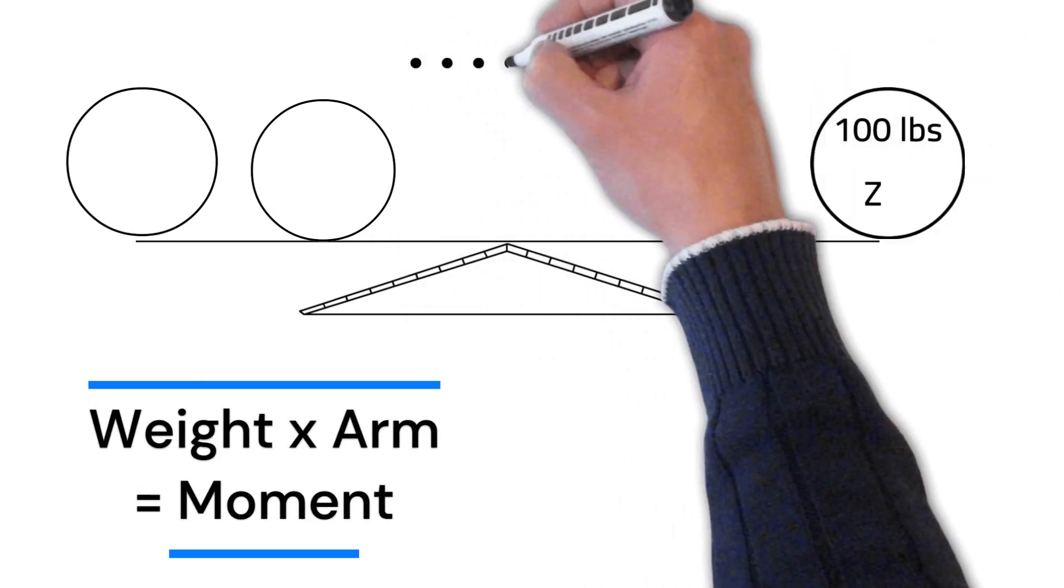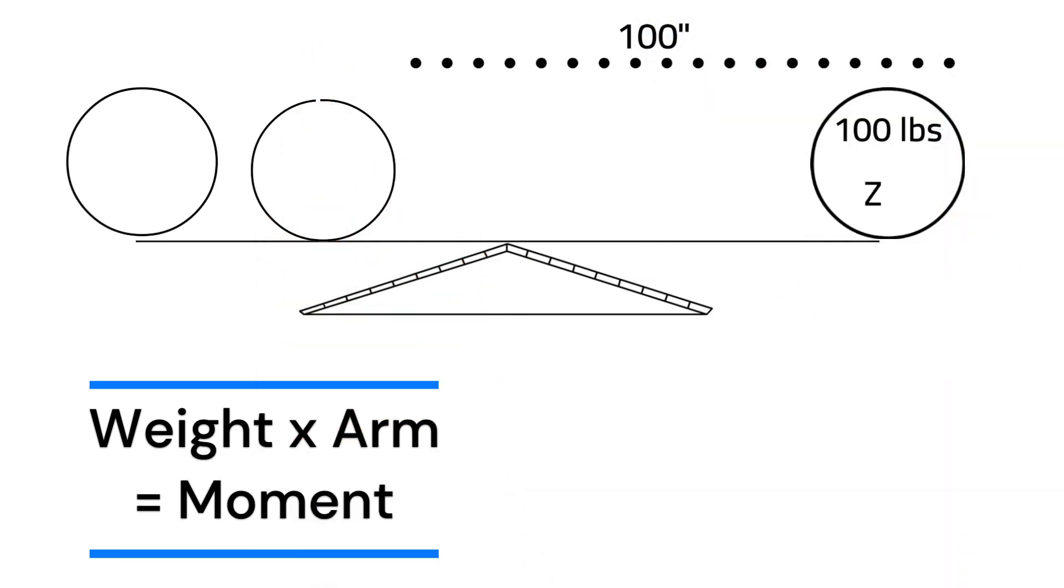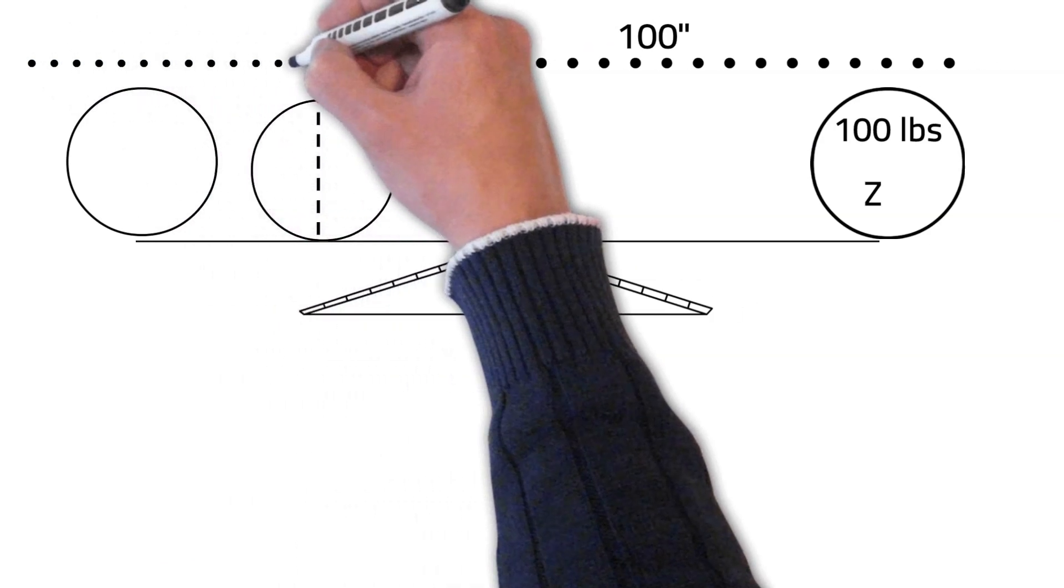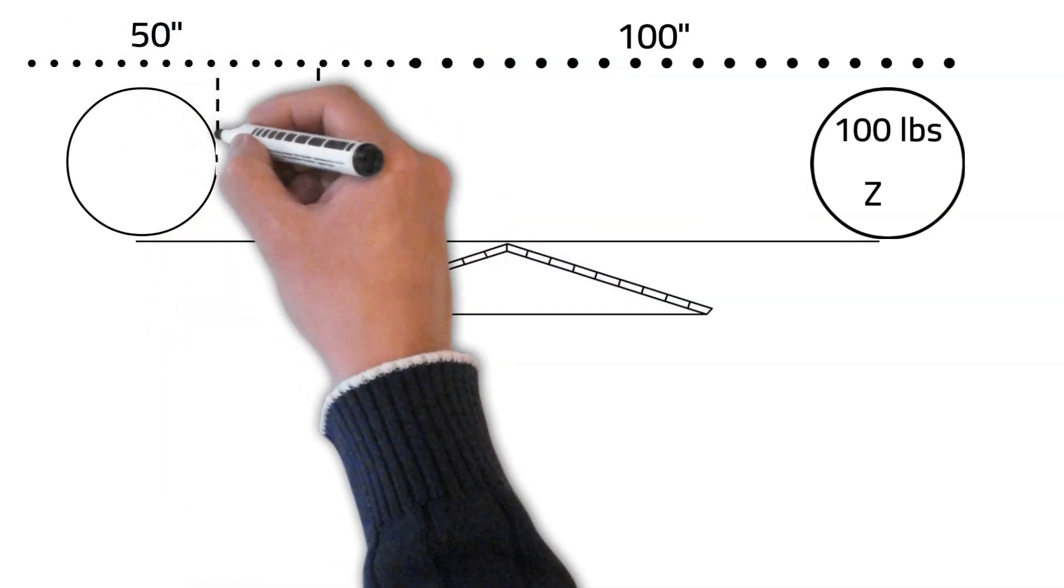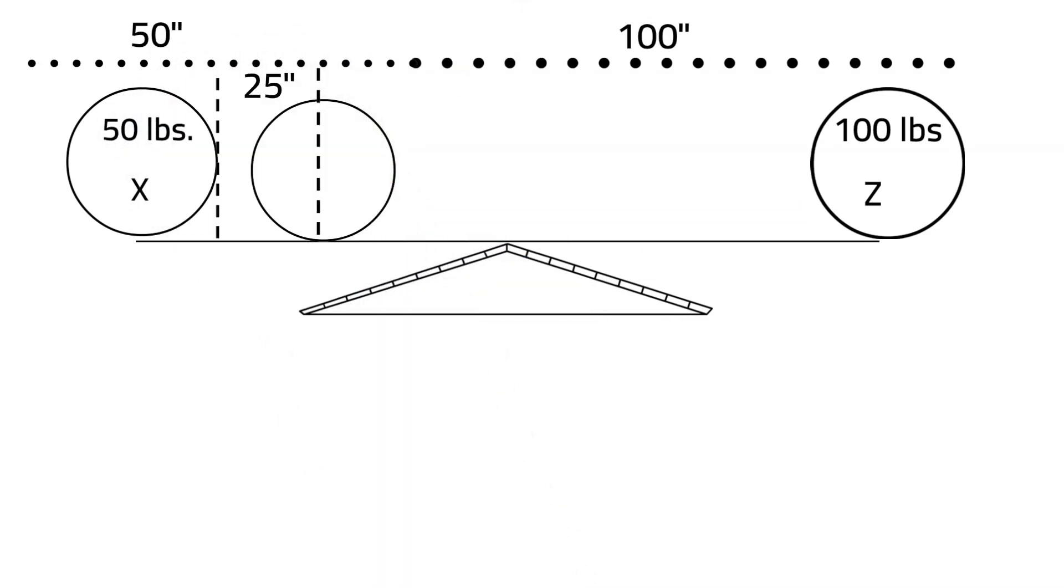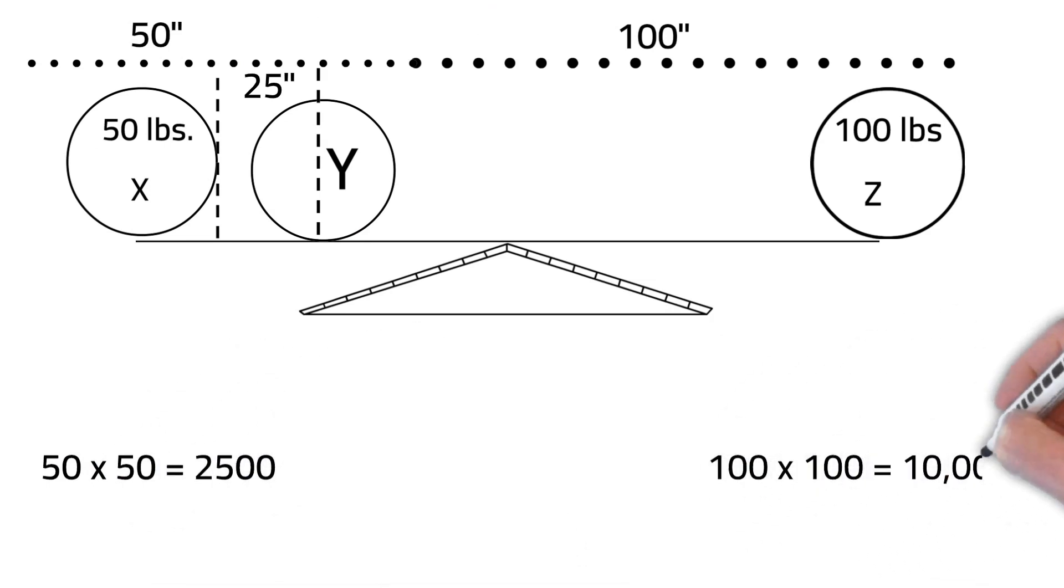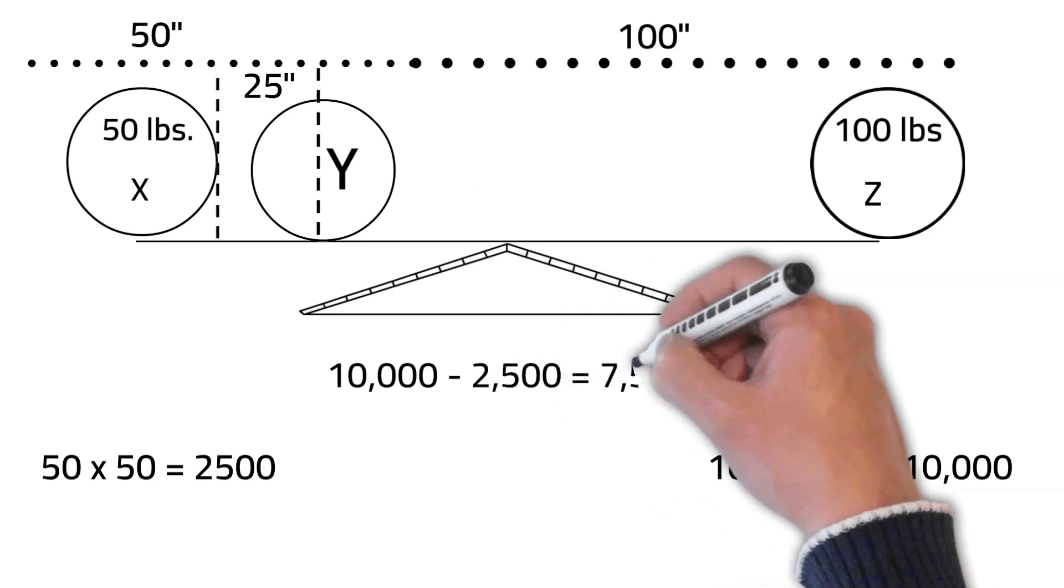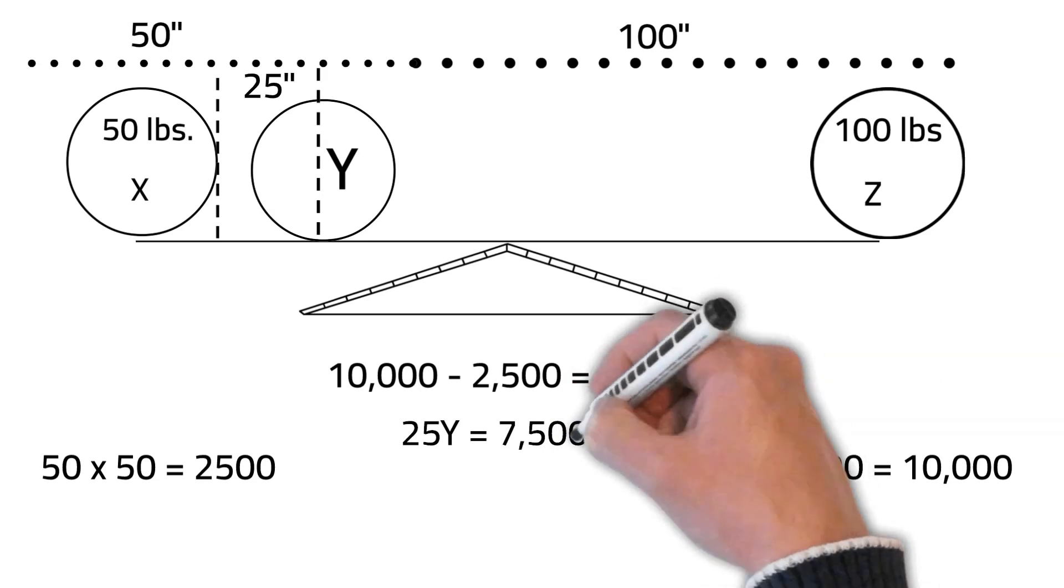The formula to find the moment is weight multiplied by arm. We can find the moment for point Z by multiplying the weight of 100 pounds by the arm of 100 inches. The moment for point Z is 10,000. We will use the same formula to find the moment for point X: 50 times 50 equals 2,500. We then subtract point X's moment of 2,500 from point Z's moment of 10,000 to get 7,500.